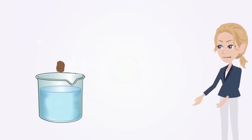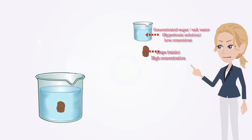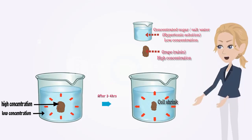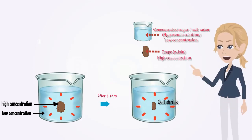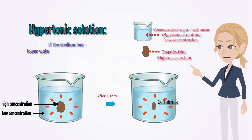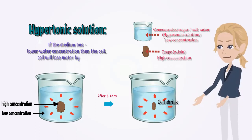When the raisin is placed in concentrated sugar or salt water, a hypertonic solution, water will move down the concentration gradient from high concentration to low concentration, causing it to shrink. From this we came with the concept of hypertonic solution. If the medium has a lower water concentration, then the cell will lose water by osmosis. Such a solution is known as a hypertonic solution.